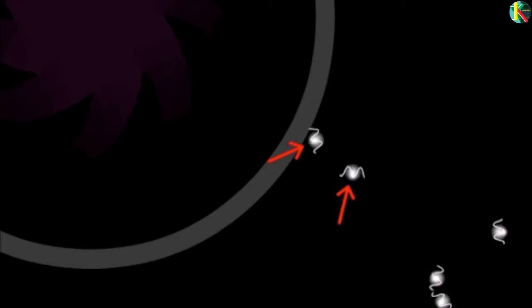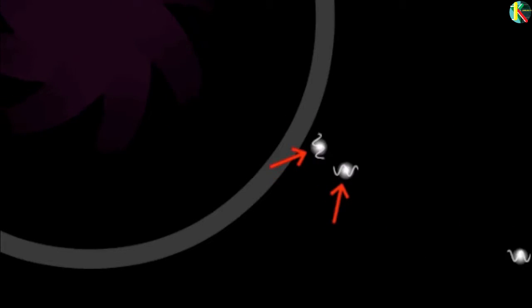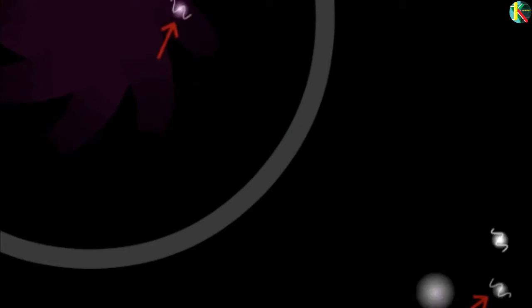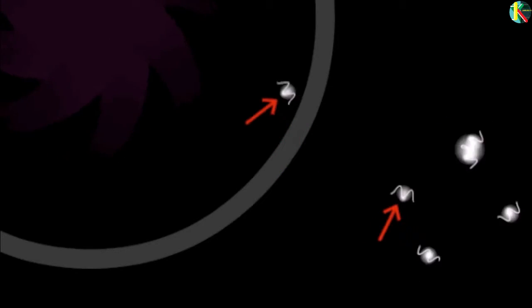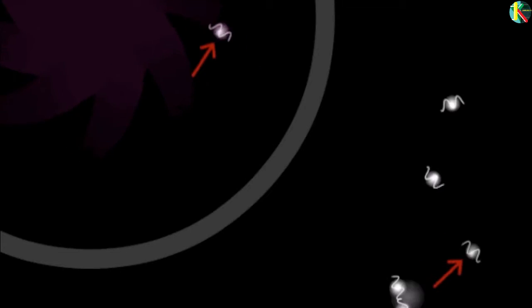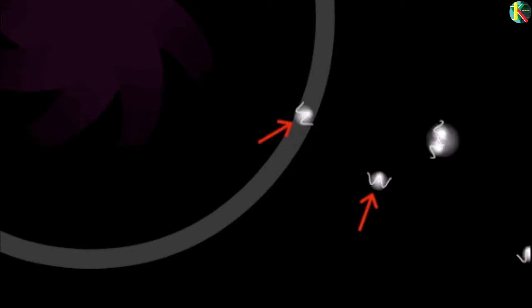He showed that black holes radiate random particles exactly as though they have a peak glow for a particular temperature that depends on their mass. So, if black holes have a temperature then they also have entropy.